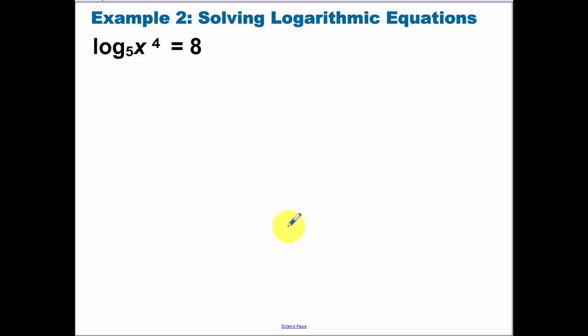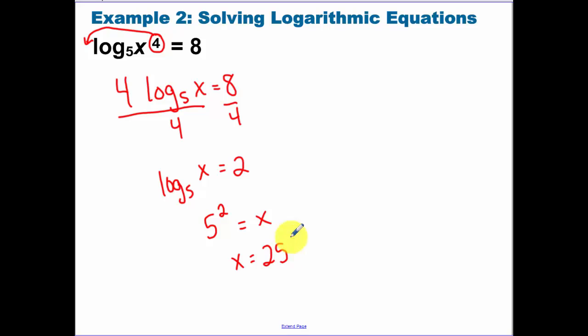Now here we have to use our properties. We have x to the fourth power. We can bring that fourth power down in front. That makes our life a lot easier. So we end up with that. Now when we divide by 4, we have a lot smaller number on the other side. So now I have 5 to the second power is equal to x, and that's going to be 25.